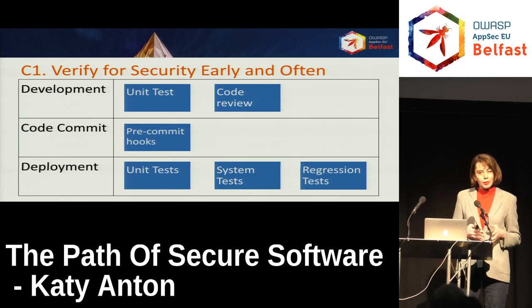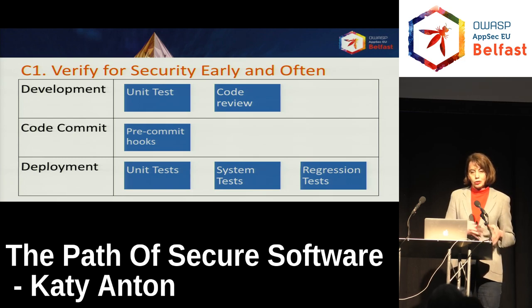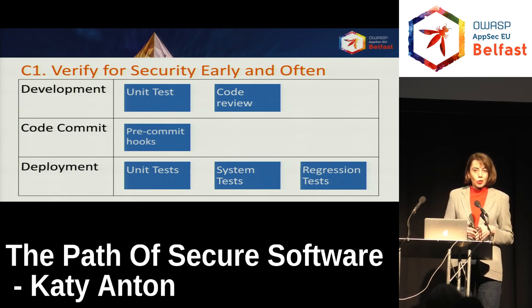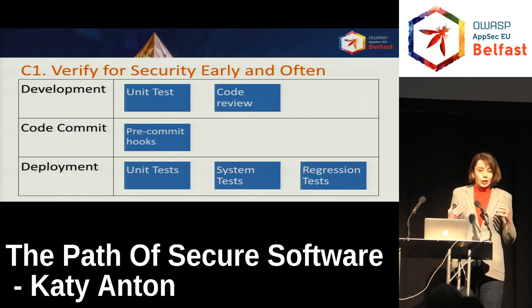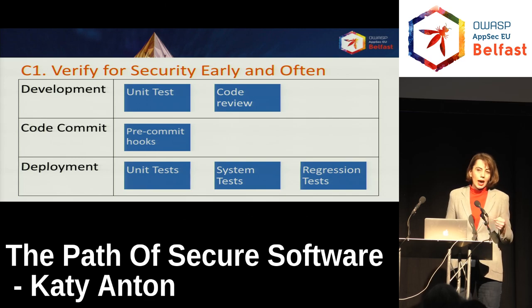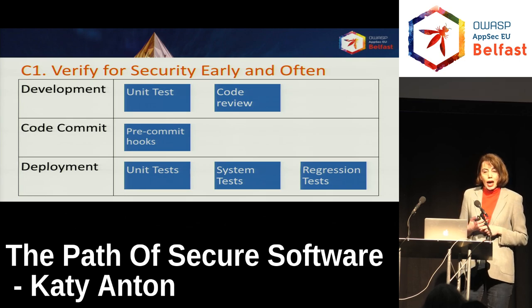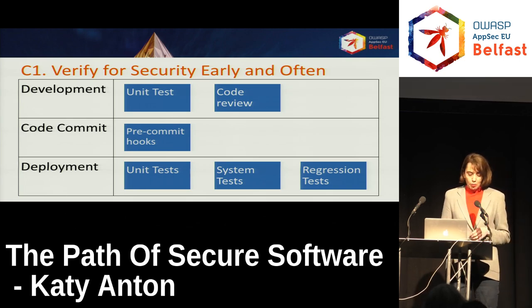I had a developer that kept committing into production code things like var_dump and print_r. Not only would that create bugs in production, but it also disclosed information. The way we sorted this was to add those functions to a list of forbidden functions at the pre-commit point.